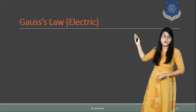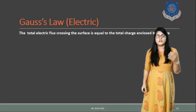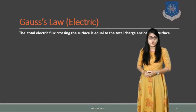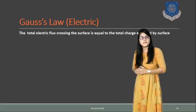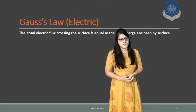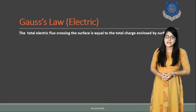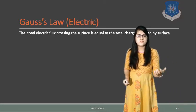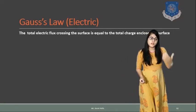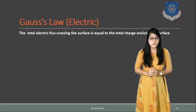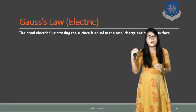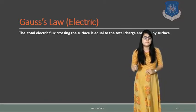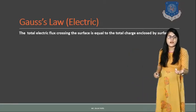Now let's move to Gauss's law for the electric field, which we discussed in detail in Unit 2. According to the statement, the total electric flux crossing the surface equals the total charge enclosed by that surface. Electric flux psi equals total charge Q. Flux density D equals flux per area, so D equals psi upon A, which means psi equals the surface integration of D dS. Therefore surface integration of D dS equals Q.